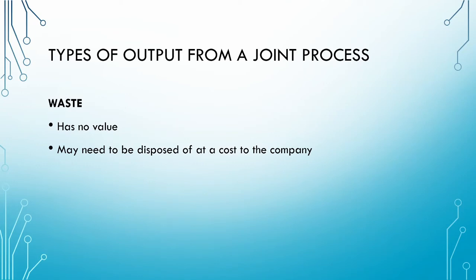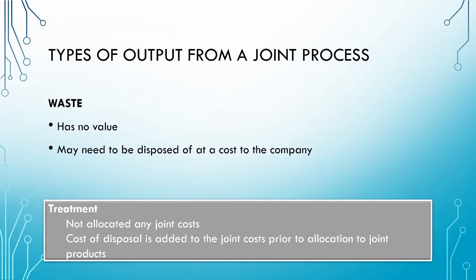Our final type of output is waste. Waste has no value and may need to be disposed of at a cost to the company. Again, the joint costs are not allocated to the waste. However, the cost of disposal of the waste is added to the joint costs prior to allocation to the joint products. Notice that this is different to by-products and scrap, where we subtract the net realizable value from the joint costs — for waste, we add the cost of disposal.